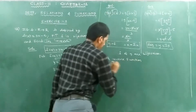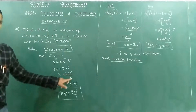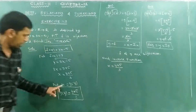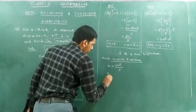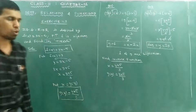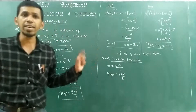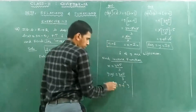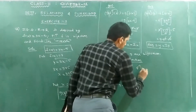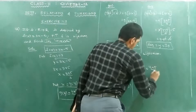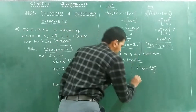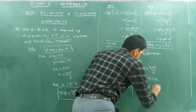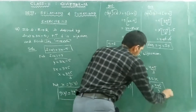This gives us the inverse function. Since g of f of x equals x and f of g of y equals y, g is the inverse of f. So f inverse of y is equal to y plus 5 divided by 3. Replace y with x: f inverse of x equals x plus 5 divided by 3. This proves f is a bijection.